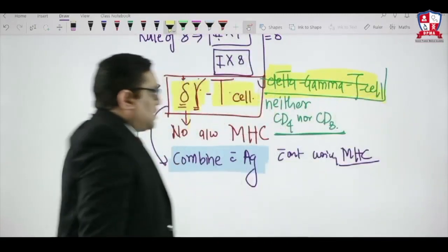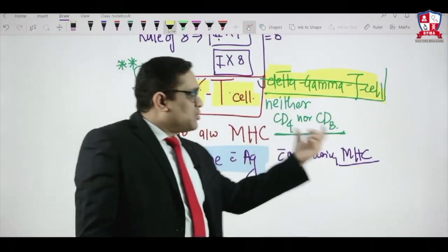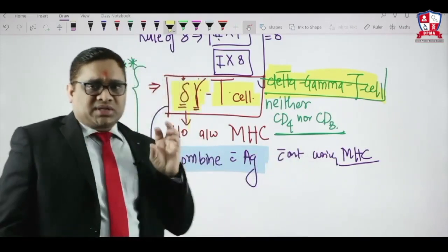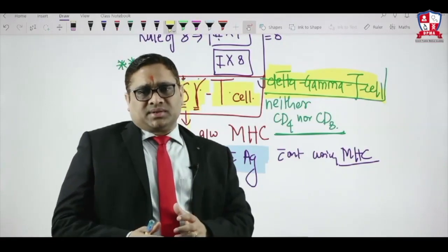Delta gamma T cells are cells which will never use MHC complexes because they are neither CD4 nor CD8 and they will not be utilizing any MHC molecules. They will just combine with foreign body antigen. So these are important points about T cell system.